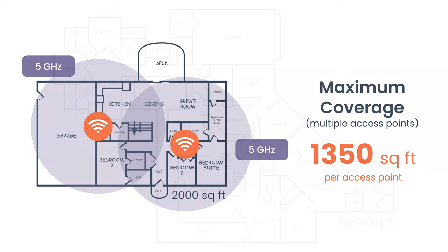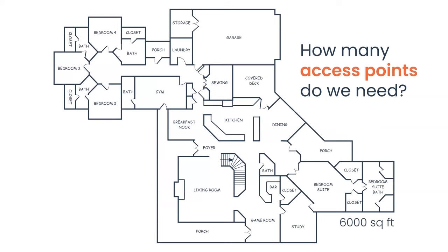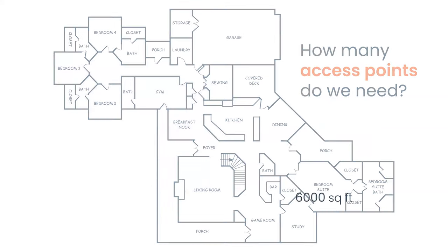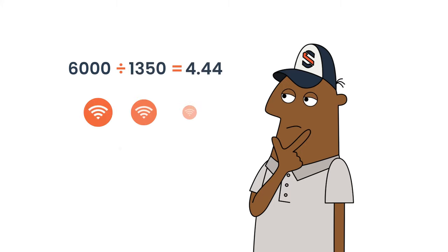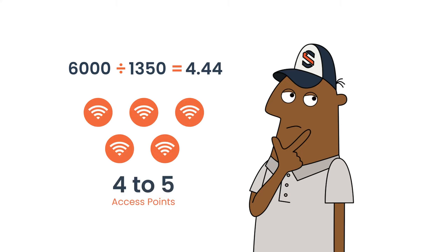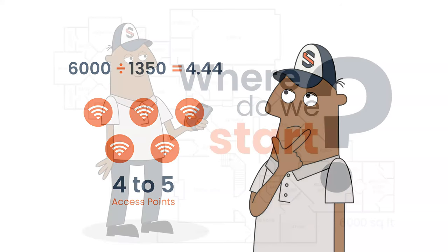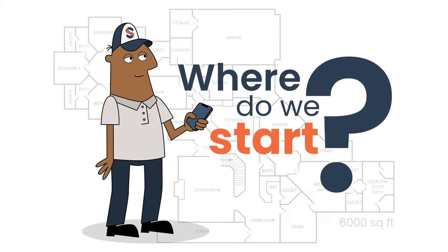When you add more than one access point, they must overlap, and the total square footage allocated per AP drops. In a multiple-AP scenario, your maximum coverage per AP is about 1,350 square feet. For a 6,000 square foot plan, divide by 1,350 to get 4.44 — always round up to five, and don't lock yourself into that maximum number until the design is complete.